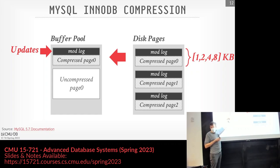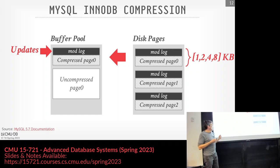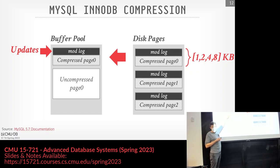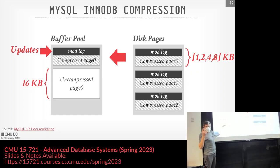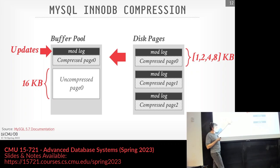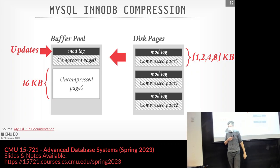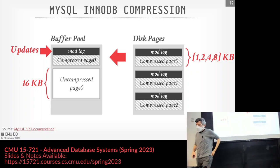If I don't modify it and need to save space, I can blow away the uncompressed copy and keep just the compressed version. The uncompressed page is always 16 kilobytes in memory in MySQL's InnoDB. So in memory uncompressed is always 16 kilobytes, but it could be some smaller size on disk.